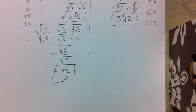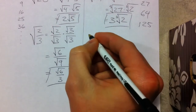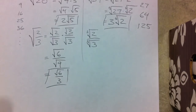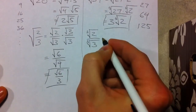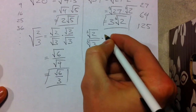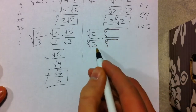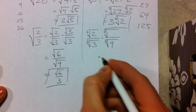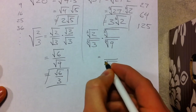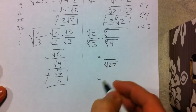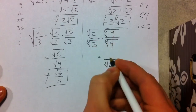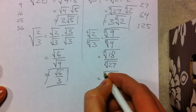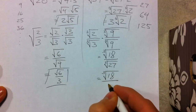We're going to apply that same principle but with cubed roots. If we have the cubed root of 2 over the cubed root of 3, we want to make 3 into a perfect cube. So we multiply by something over something — specifically, we need to multiply by 9 so the bottom becomes the cube root of 27. We get the cube root of 18 divided by the cube root of 27, and the cube root of 27 is 3, giving us ∛18 over 3.